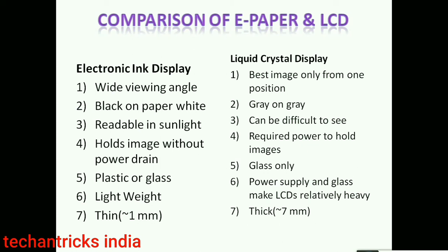E-ink paper displays can be made of plastic or glass, making them lightweight, while LCD requires a glass power supply which makes it heavier. In terms of thickness, e-ink displays are very thin at about 1 mm, but LCD is much thicker at about 7 mm.